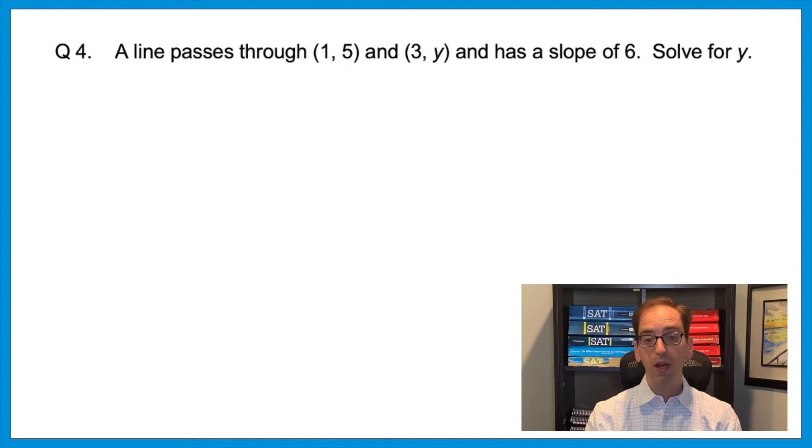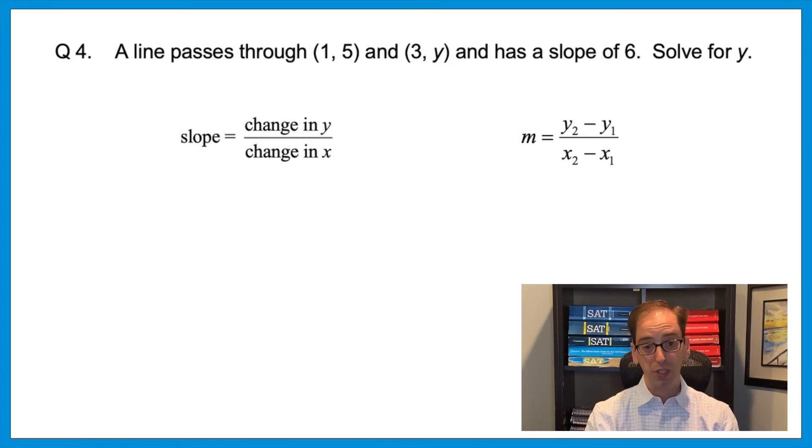Let's see how the concept of formula manipulation can come up on a slope question. Question 4. A line passes through 1,5 and 3,y and has a slope of 6. Solve for y. You might have learned that slope is rise over run or change in y over change in x. So just to be technical about the actual formula, that's m equals y2 minus y1 over x2 minus x1. Press pause. Give it a shot.